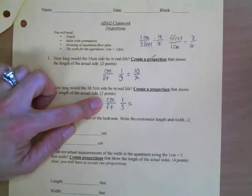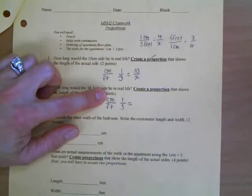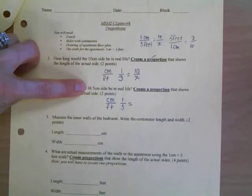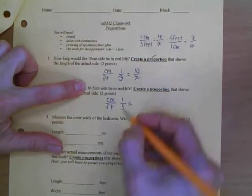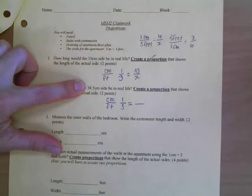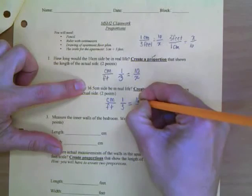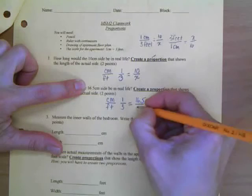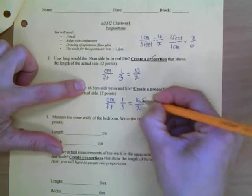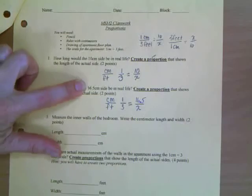Then Casey, what am I going to set up for my second fraction here? I got one centimeter equals three feet. What do I got over here? What's my second fraction going to look like? Don't be shy. Just shout it out. 16.5, right on the top, and then one on the bottom. X, because I don't know how many feet. That's what they're asking me.